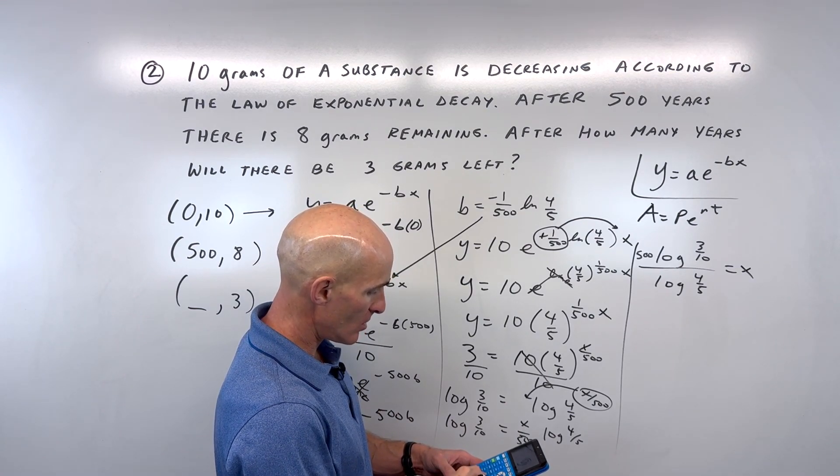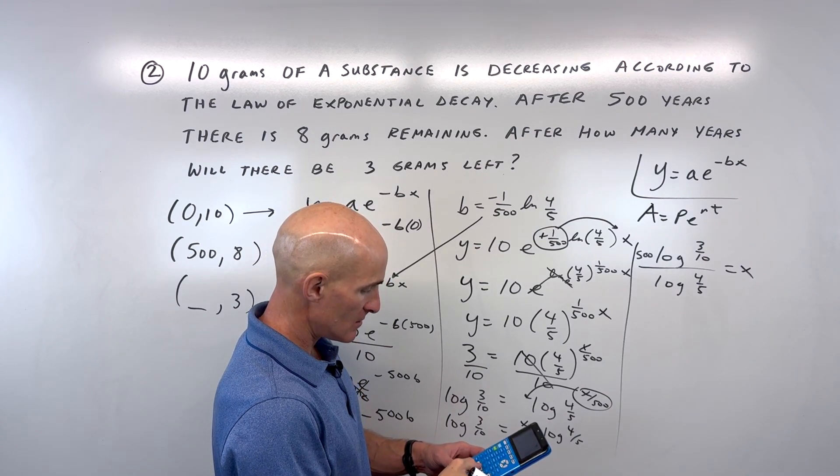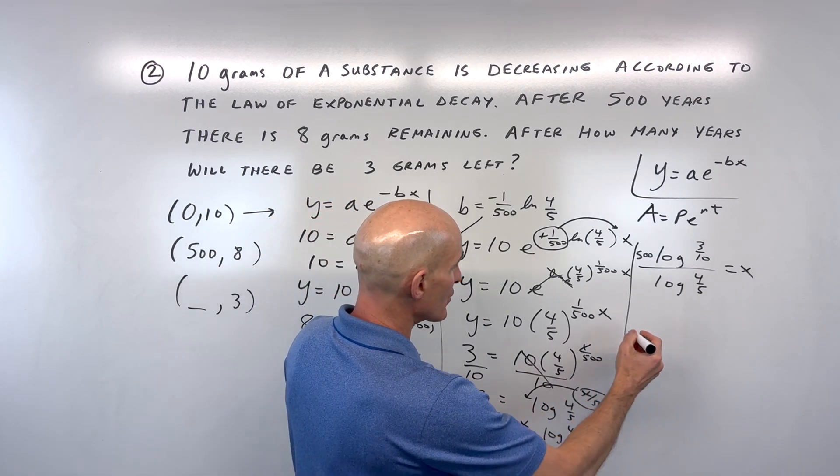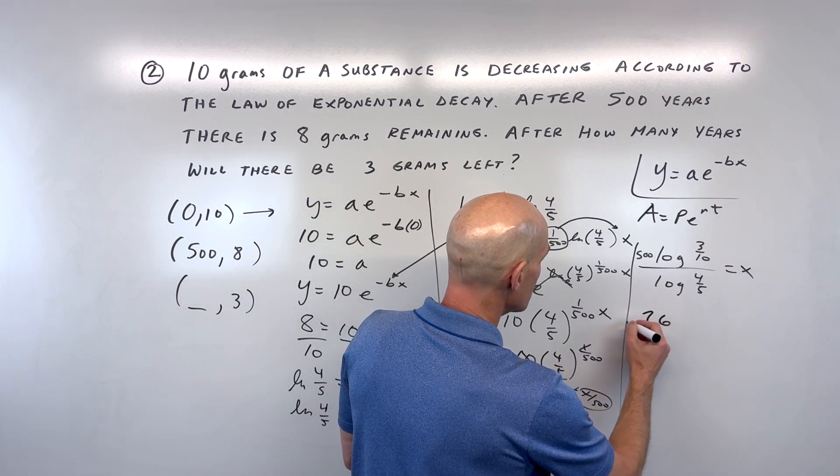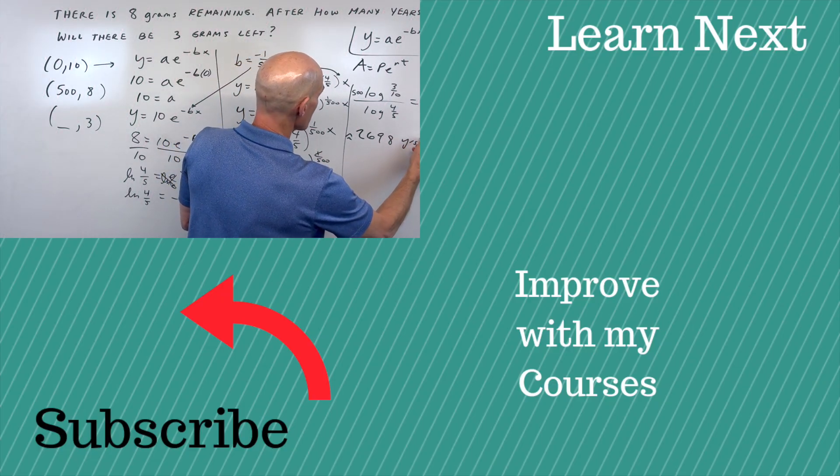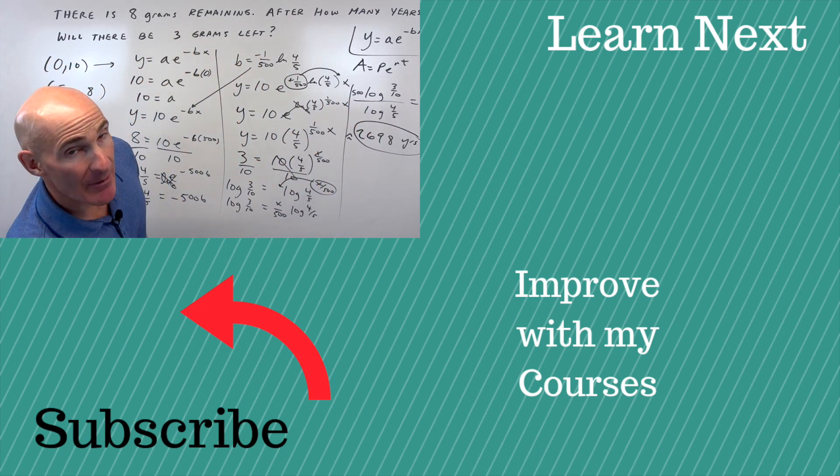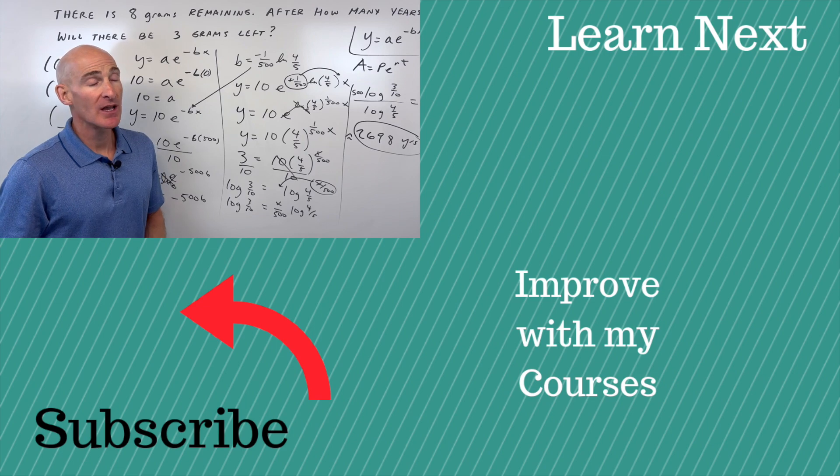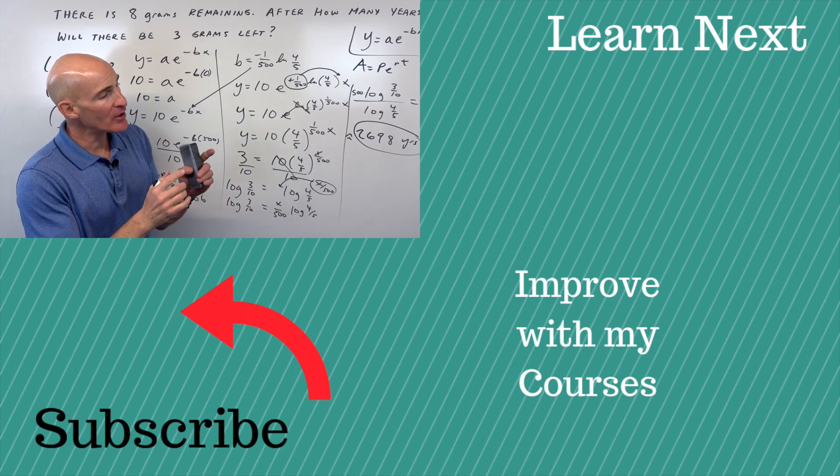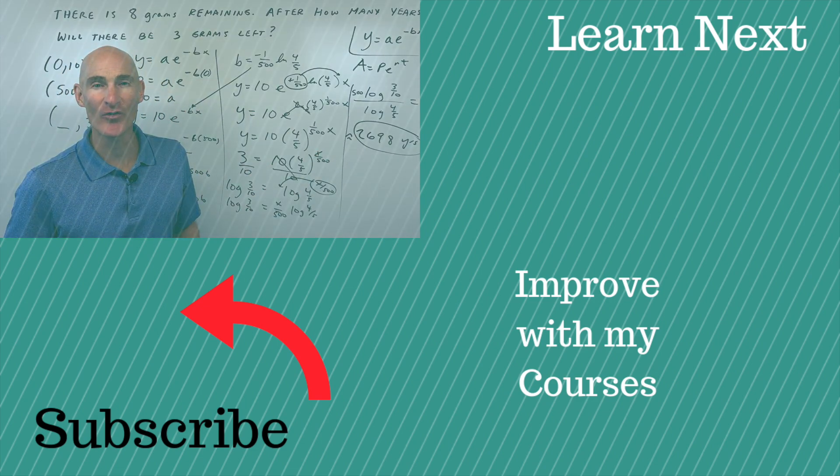Let's go to the calculator: 500 log of 3 tenths divided by log of 4 fifths. I'm getting, rounding to the nearest year, approximately 2,698 years for it to break down to just 3 grams left. Great job if you followed these examples. If you want more practice with exponential growth and decay models, I'll put another video right there. I'll see you over there.